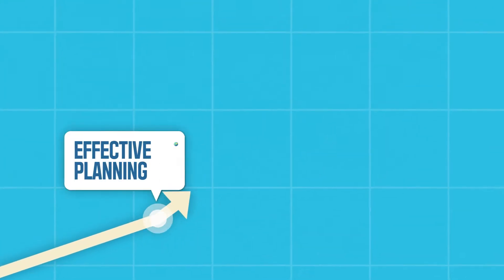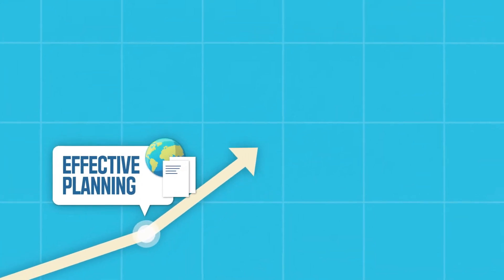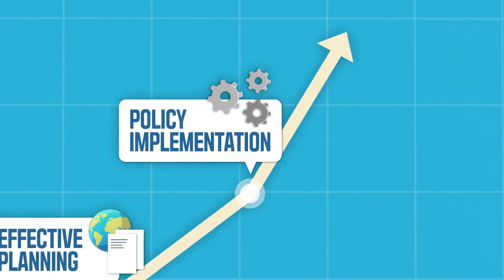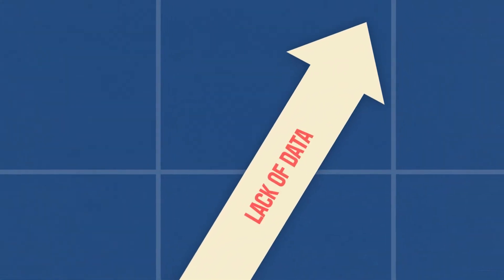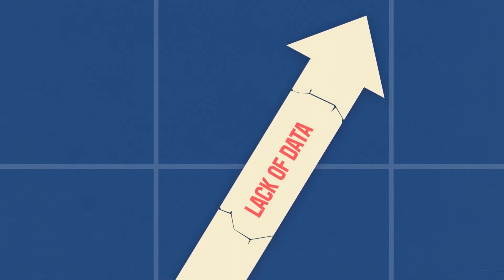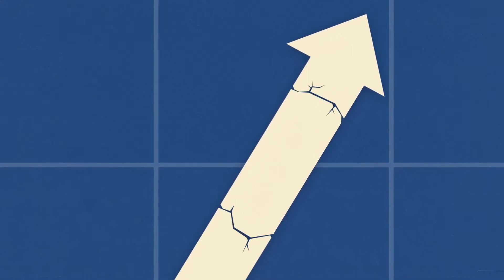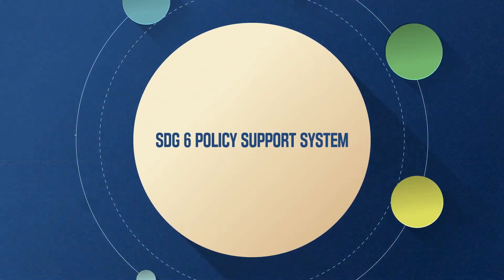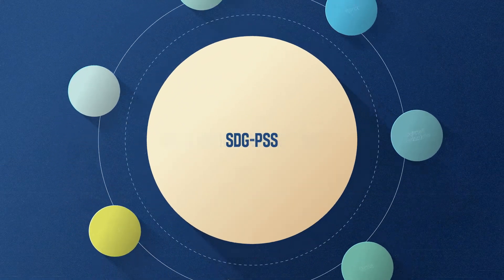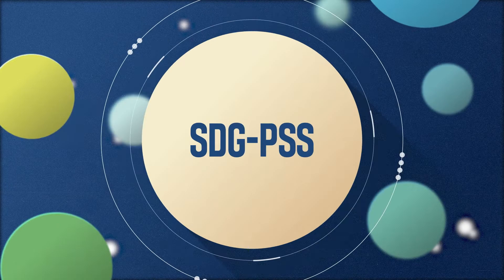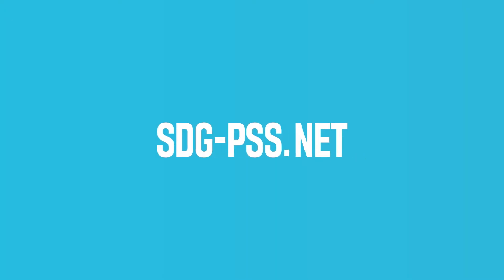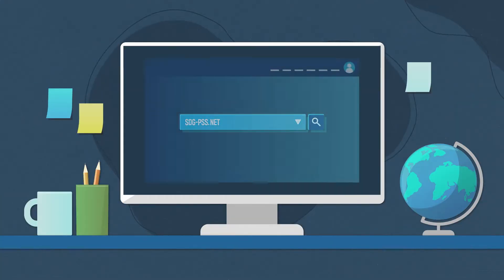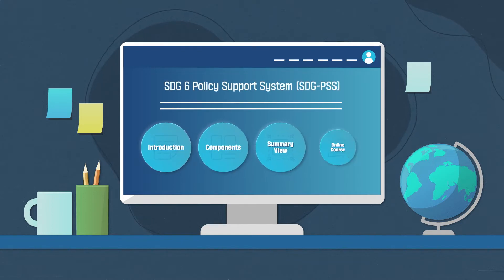Achieving SDG 6 requires effective planning and policy implementation. However, this could be challenging for countries who often face a lack of data and evidence needed. To address this problem, a consortium of partners has come together and developed the SDG 6 Policy Support System as a free online tool that works in data-limited conditions.